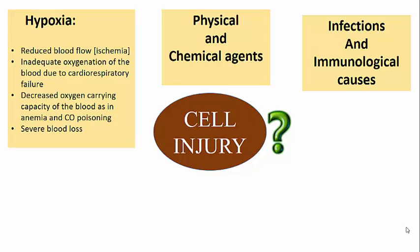Moving on to the next cause of cell injury: infectious and immunological causes. Any infectious agent can result in cell injury — you can refer to the entire list of infectious agents in your microbiology textbooks. Regarding immunological causes, the immune system is a very important component of our body which serves as defense against various infectious pathogens, but immune reactions are a double-edged sword — they can also cause cell injury in addition to being a protective mechanism.